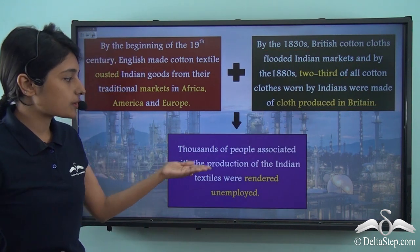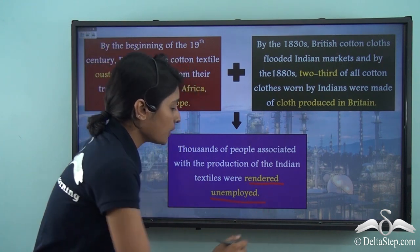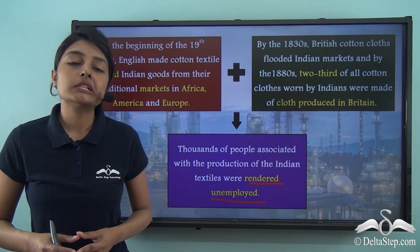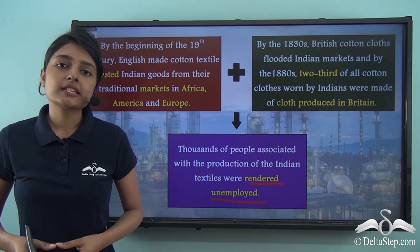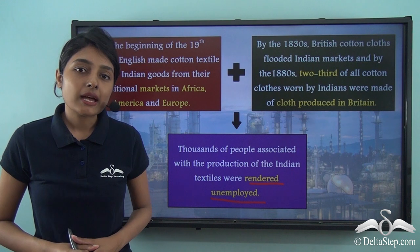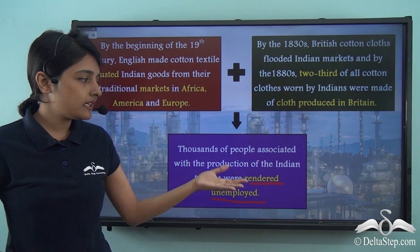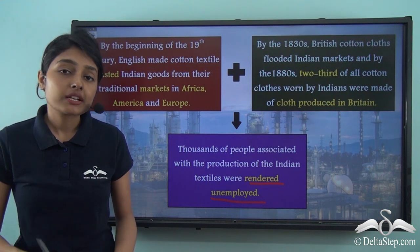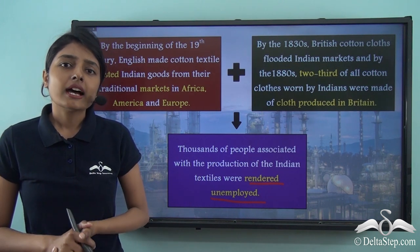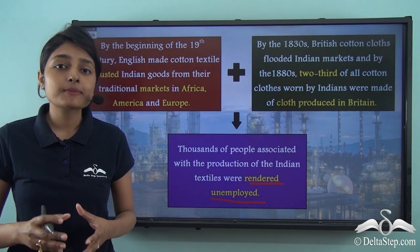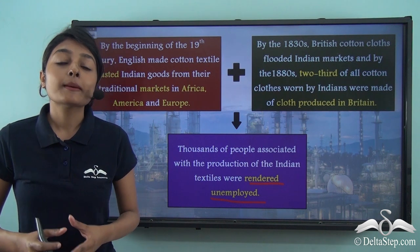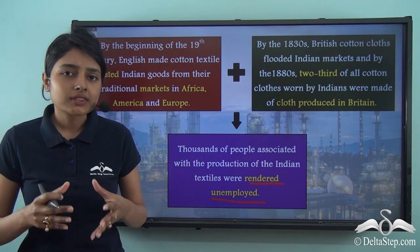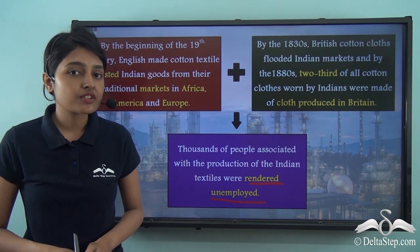Thousands of people who were associated with the production of Indian textiles were rendered unemployed. Just a while ago we learnt how so many people depended on the cotton textile industry in the Indian subcontinent to earn their living, because different kinds of activities are associated with the production of textiles. When the demand for Indian textiles fell, it was inevitable that all these millions of people were rendered unemployed. They had no work, because it was the British cotton textiles that flooded the Indian markets, and these were quite cheap at that point of time simply because they were produced in large bulks by machines — not manually produced as it was done by the Indian cotton textile producers.